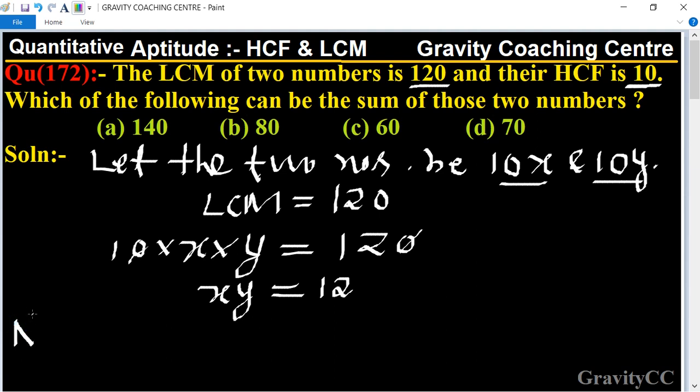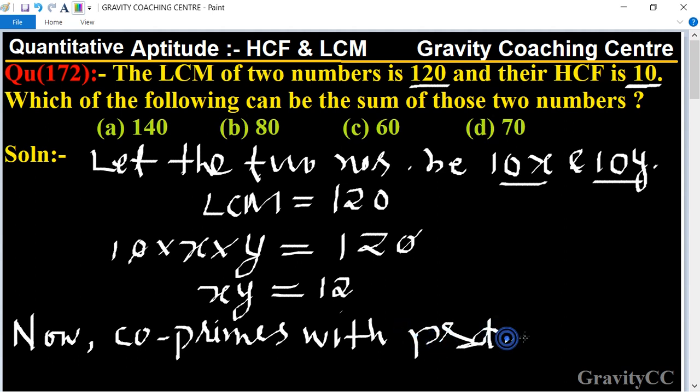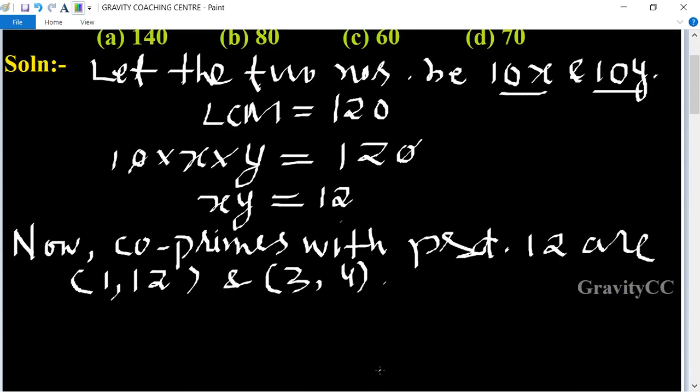Now we find the co-primes of 12. So co-primes with product 12 are: 1 comma 12, and 3 comma 4.